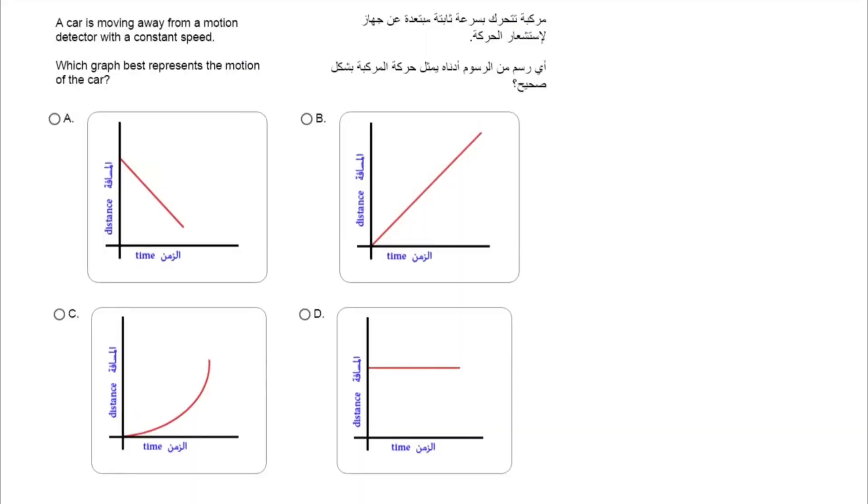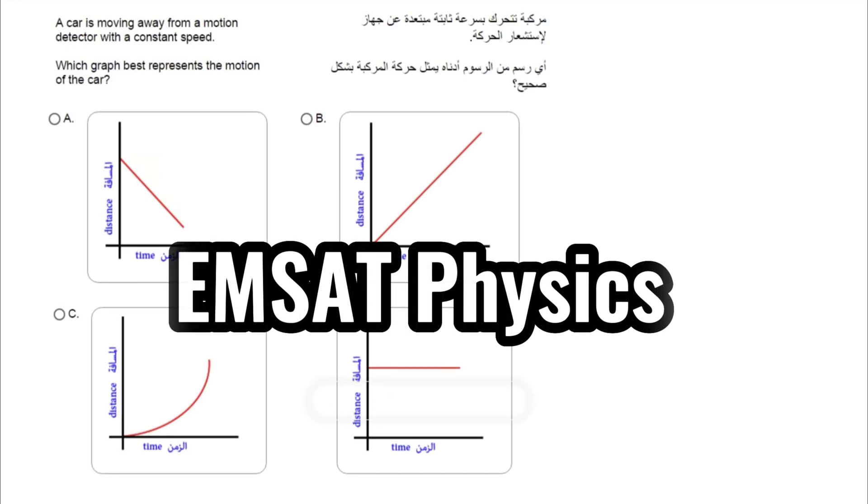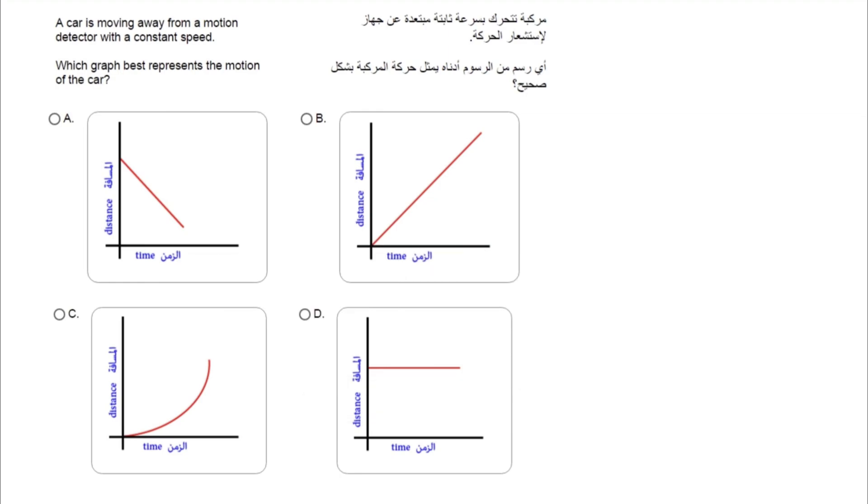Now let's get right to the problem. We have a question straight from the physics examination. Let's go through the question. We have a car which is moving away from a motion detector with a constant speed. Which graph best represents the motion of the car?